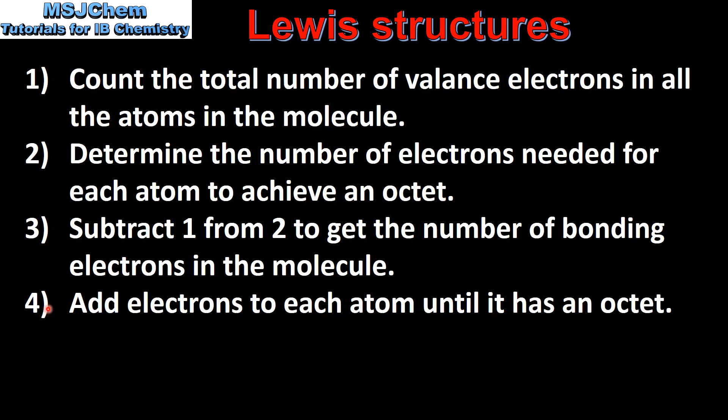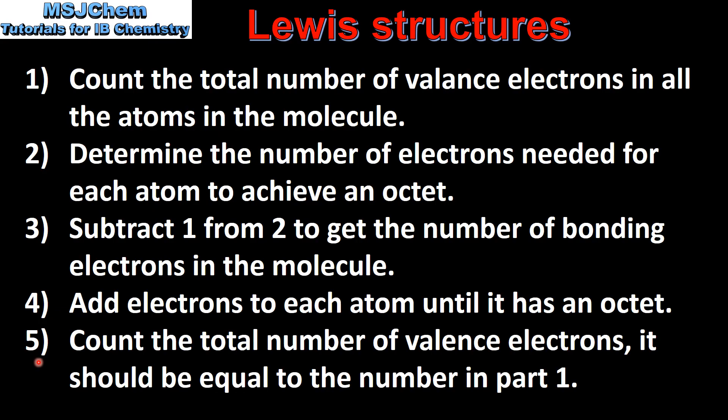Next, you subtract step 1 from step 2 to get the number of bonding electrons in the molecule. Step 4: add electrons to each atom until it has an octet. And finally, step 5: count the total number of valence electrons in the Lewis structure — it should be equal to the number in step 1.